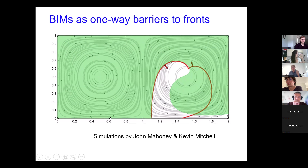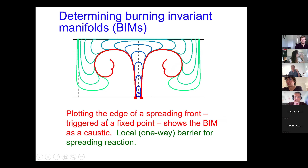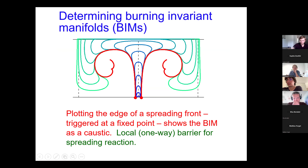A cool thing about this is that if we take into account that there's a burning invariant manifold on the other side as well, if you trigger a reaction in between the two of them, that reaction has to go all the way around before it can get into the centers of the vortices.